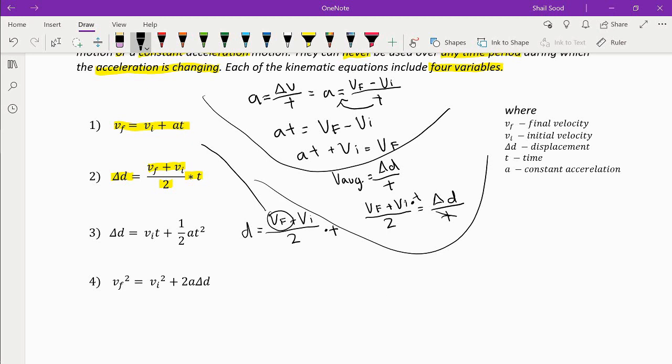What that would look like is D equals AT plus VI plus VI over 2 multiplied by T. We can combine these two VIs together, so that's 2VI. If we simplify that equation,